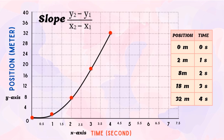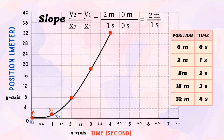To prove that the velocity of the curved graph is not constant, we apply rise over run. For the first two points: y₂ = 2 m, y₁ = 0 m, x₂ = 1 s, x₁ = 0 s. So 2 − 0 = 2 meters, and 1 − 0 = 1 second. Therefore 2 ÷ 1 = 2 meters per second. The velocity of the first two points is 2 meters per second.